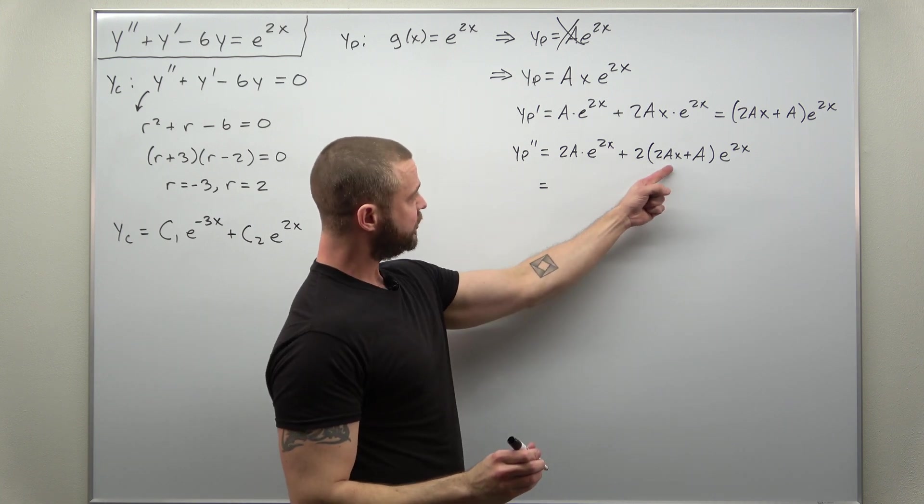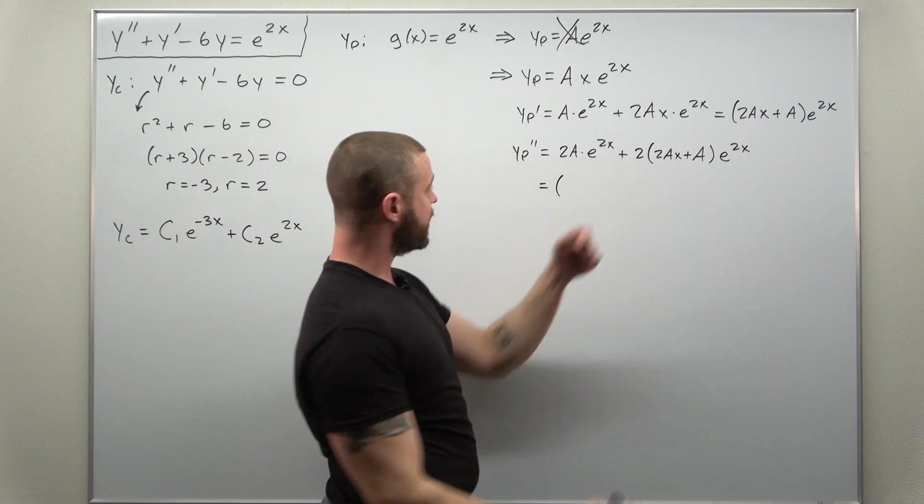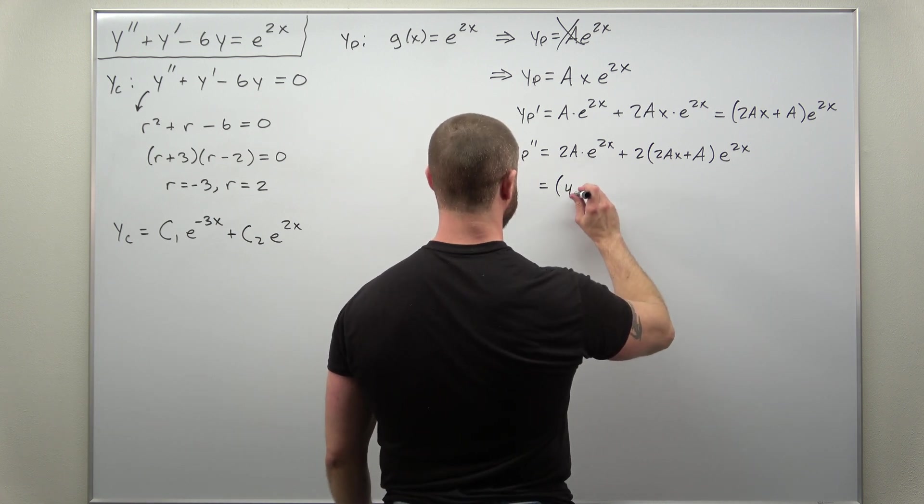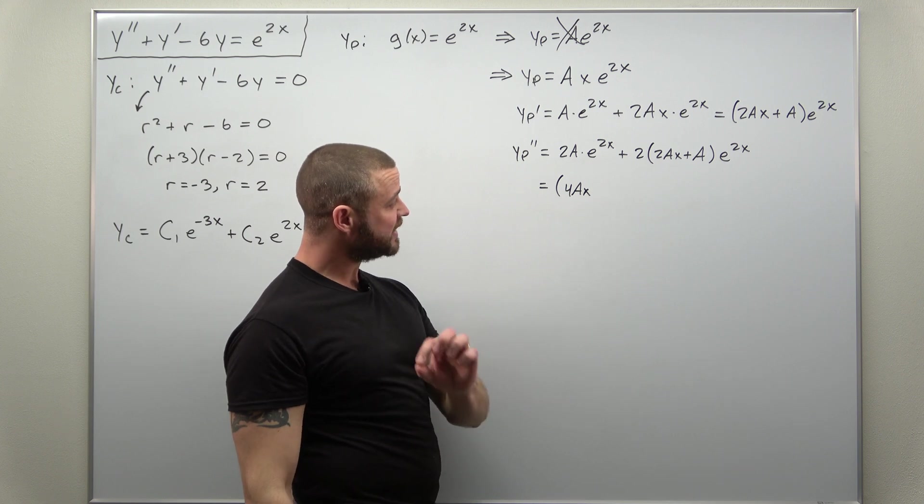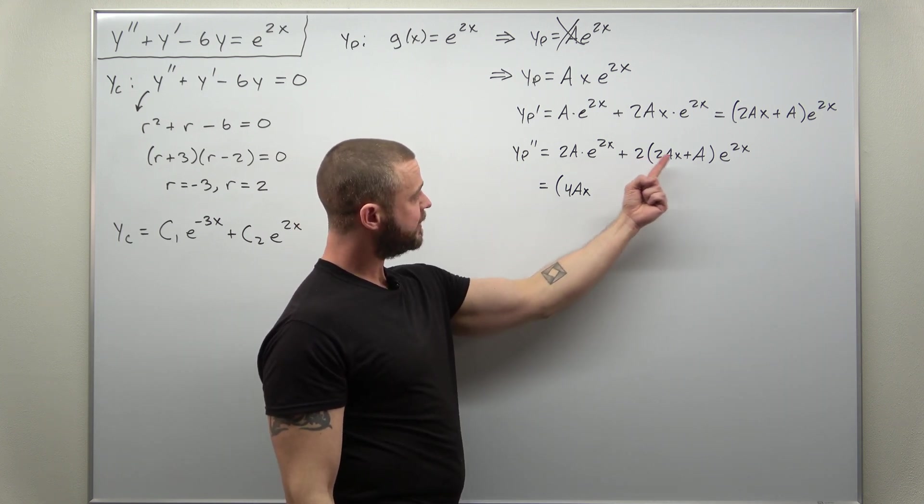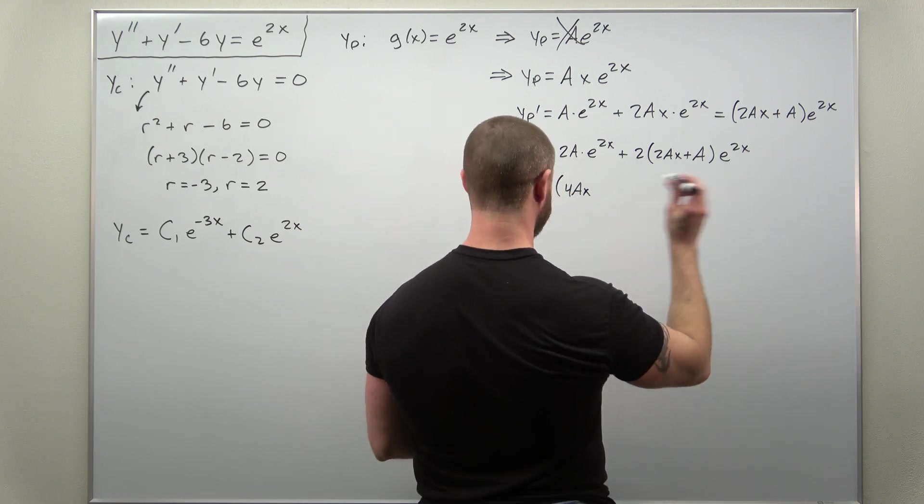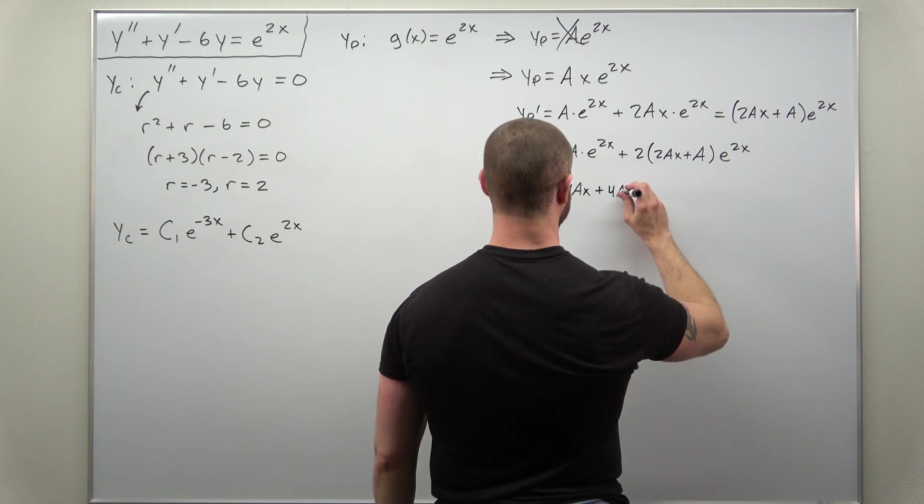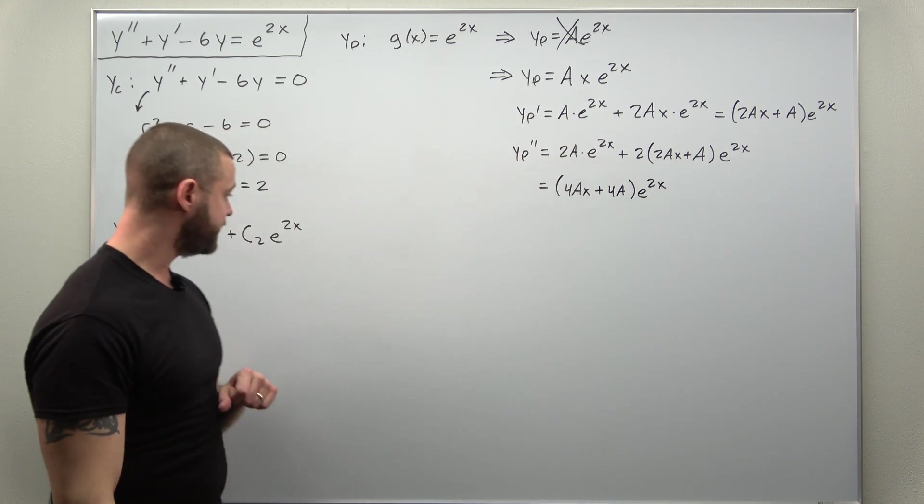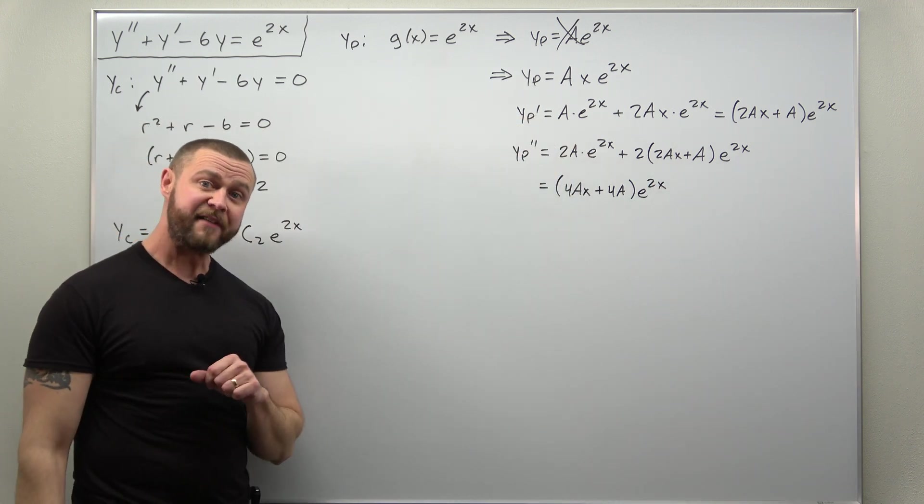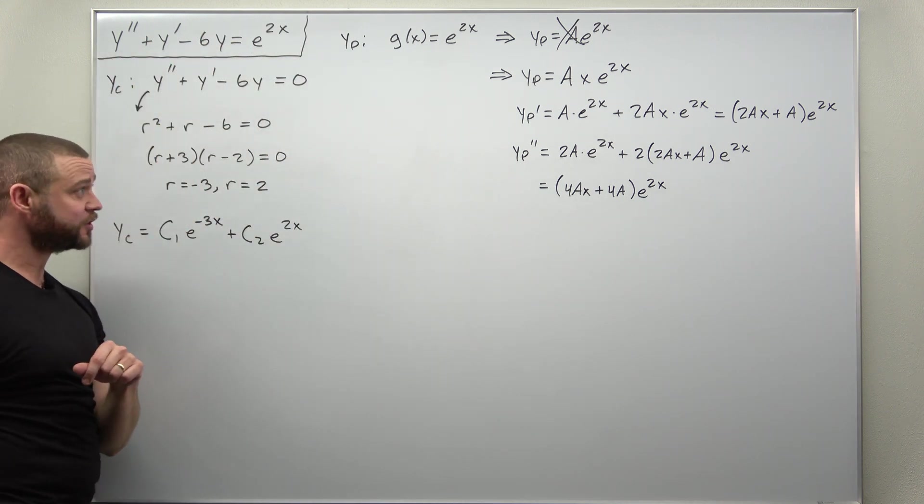Now this one, we can again factor e^(2x) out from everything. And if we distribute that 2, looks like what we have is 4Ax. And then what are your like terms, the constants without x? We have 2A and another 2A, so that should be 4A. And that's your second derivative term. We have everything we need to plug it into the non-homogeneous ODE.